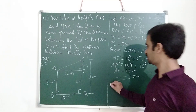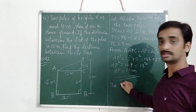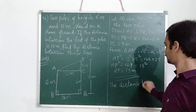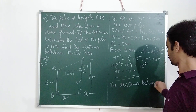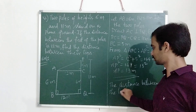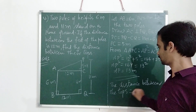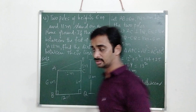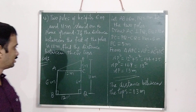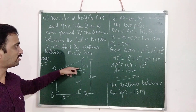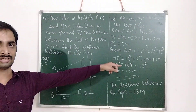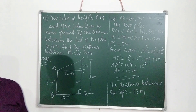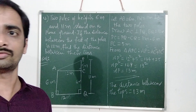So the distance between the tops is equal to 13m. In this way we can solve this problem — it is a right angle triangle formed here and we used the Pythagorean theorem to find this distance between the tops. Let us see some more problems in the next video.